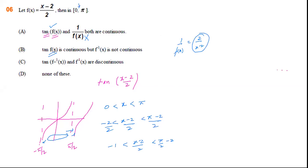We have already shown that tan of f(x) is continuous. Now who would like to tell me about f inverse of x? A student responds: f inverse of x is continuous. Correct — because using y equals (x minus 2) by 2, you can solve for x, which comes out to be 2y plus 2, giving f inverse of x equal to 2x plus 2.